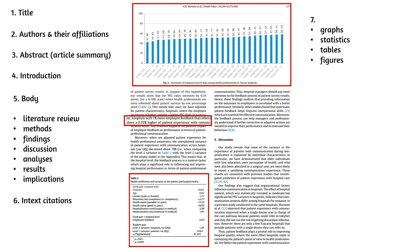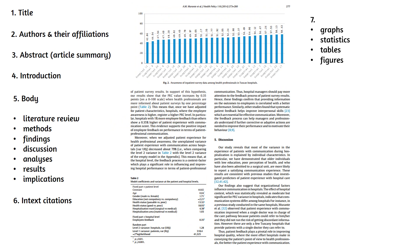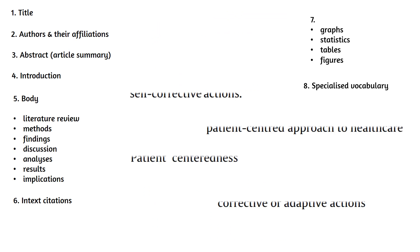Graphs, statistics, tables, or figures will most likely be present throughout the article. Don't worry — you're not expected to understand complex statistics. However, this information is here to help explain the data from the research. You'll also notice specialised vocabulary used throughout. This can be daunting at first, but as you develop your knowledge in the subject field, you'll come to understand the vocabulary associated with that discipline area.